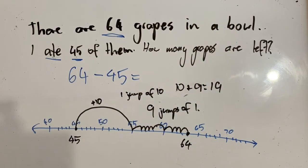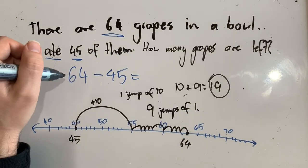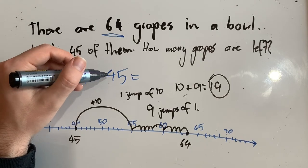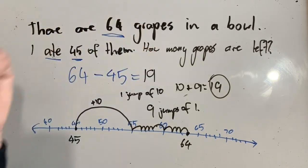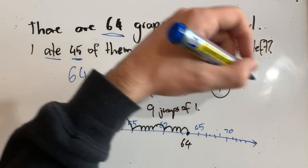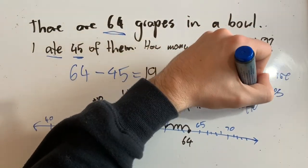And that is my solution. If I started with 64 grapes and ate 45 of them, I would have 19 grapes left. And I should write this as a worded answer: there are 19 grapes left.